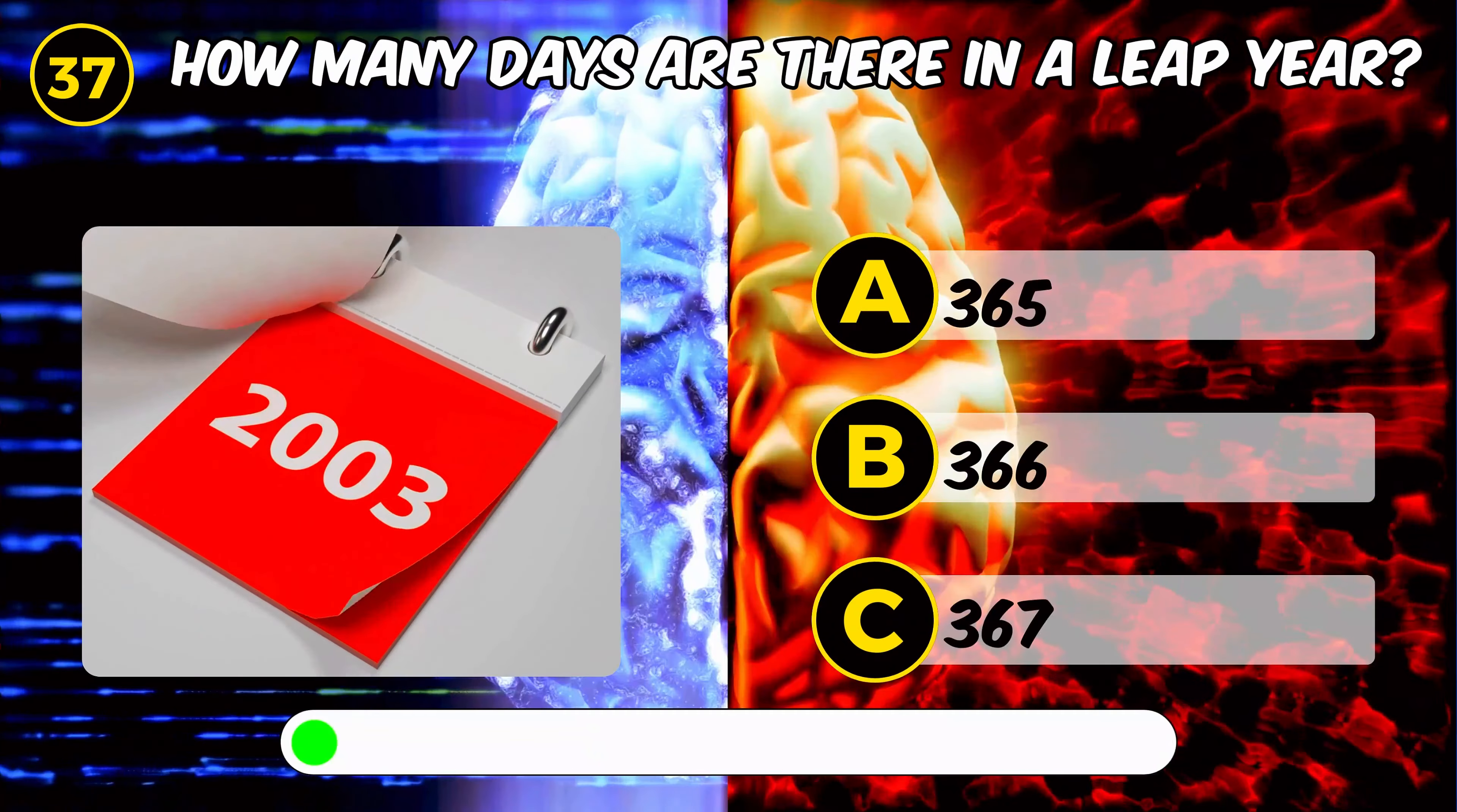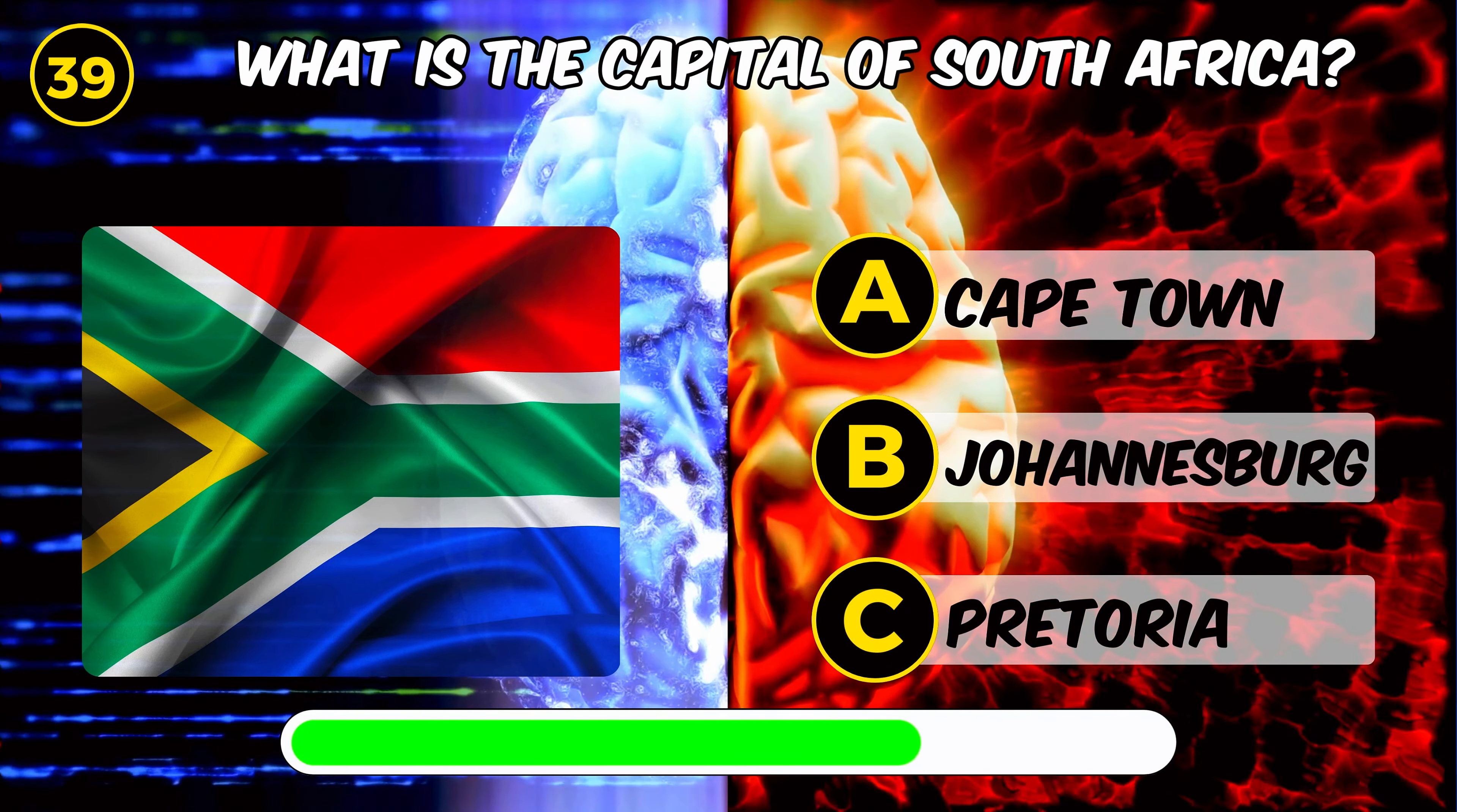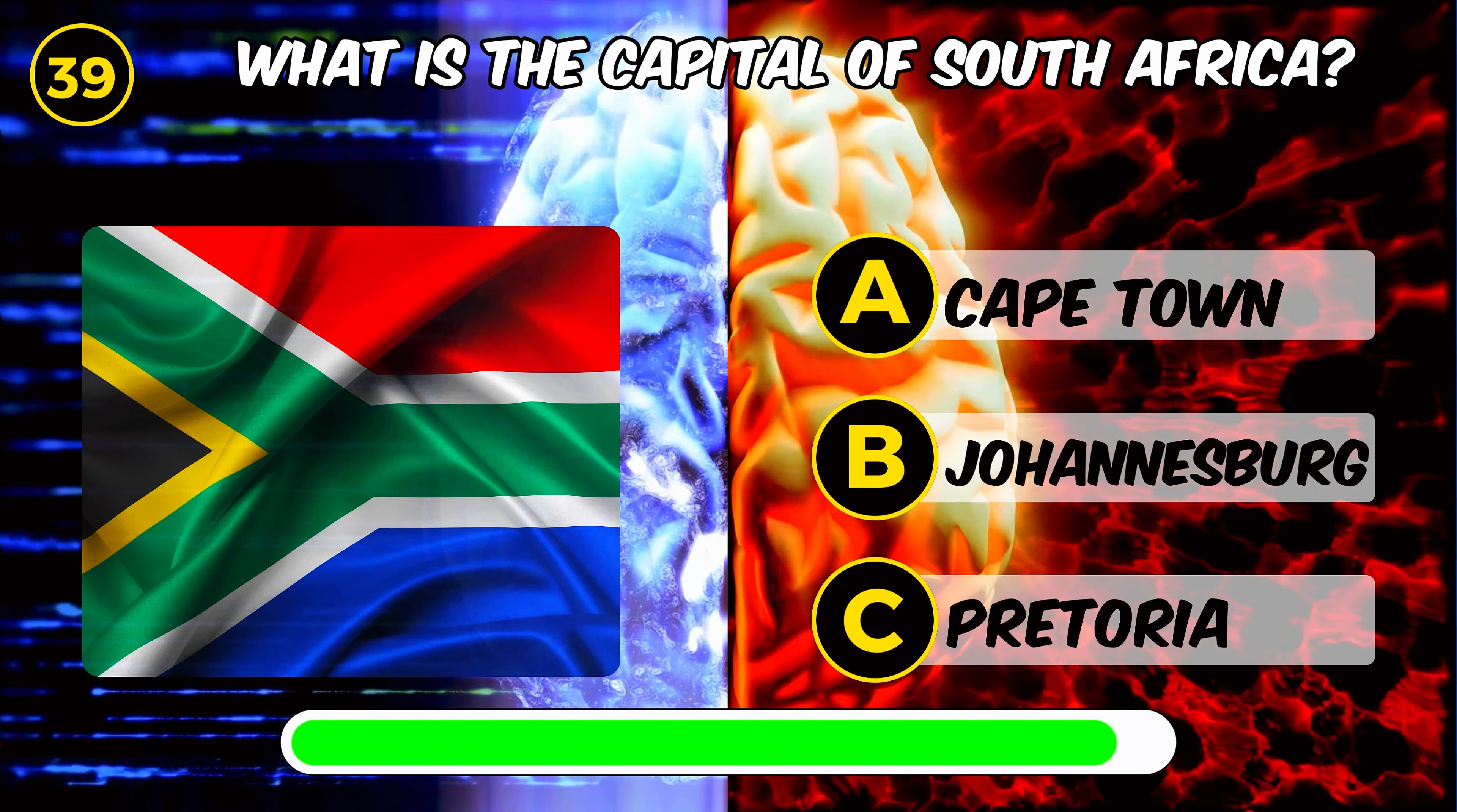How many days are there in a leap year? 366. What is the square of 9? 81. Correct. What is the capital of South Africa? Pretoria. If it is 20 degrees Celsius, what is the temperature in Fahrenheit? 68. How many centimeters are in one meter? 100. Perfect.